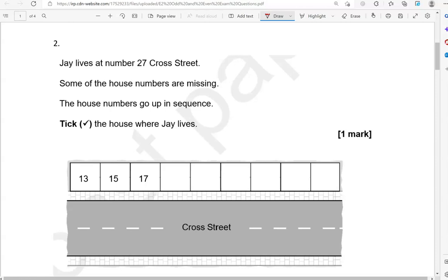Jay lives at number 27 Cross Street. Some of the house numbers are missing. The house numbers go up in sequence. Tick the house where Jay lives. So we've got 13, 15, then 15, 17, next will be 19, then 21, 23, 25, 27, 29.